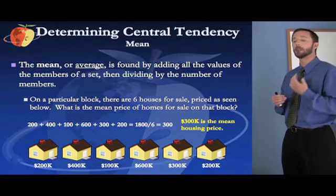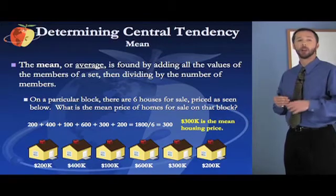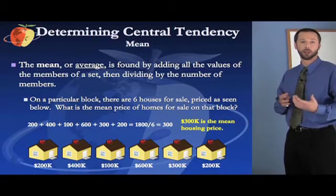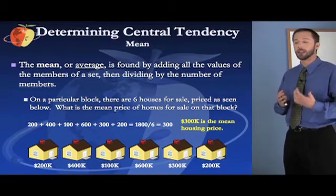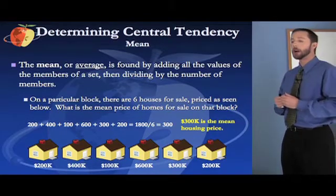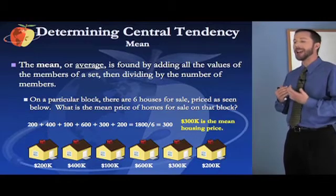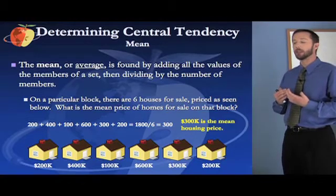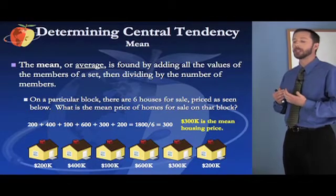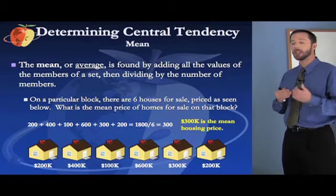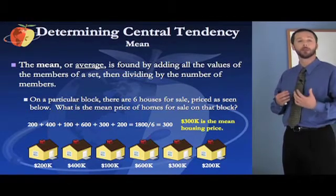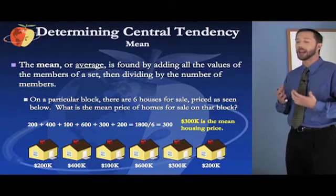Let's talk first about mean or average. Average and mean are basically synonymous. The average or the mean is found by adding all the values of the members of a set and then dividing by the number of members in that set.